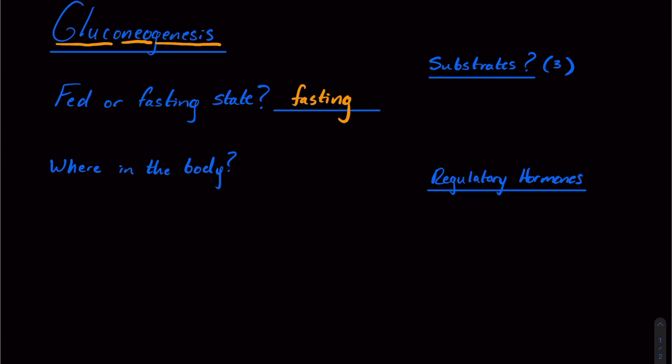So gluconeogenesis occurs when we haven't eaten for a while, especially after we've depleted our existing glycogen stores in the liver. Which brings me to my next point. Where in the body is this occurring?